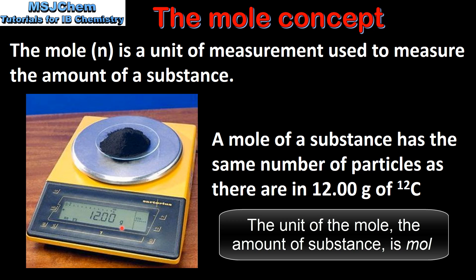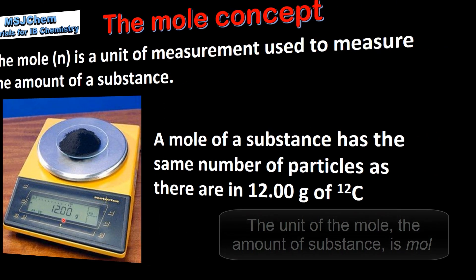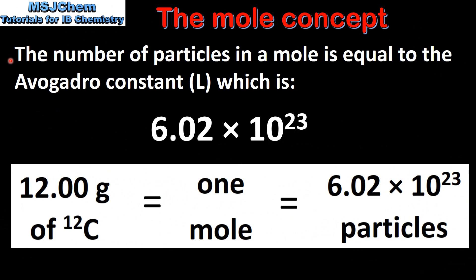On this mass balance we have exactly 12 grams of carbon-12, which is equal to 1 mole. The number of particles in a mole is equal to the Avogadro constant, which is 6.02 times 10 to the power of 23. One mole of any substance contains this number of particles. So to summarize: 12 grams of the isotope carbon-12 is equal to 1 mole, which is equal to 6.02 times 10 to the power of 23 particles.